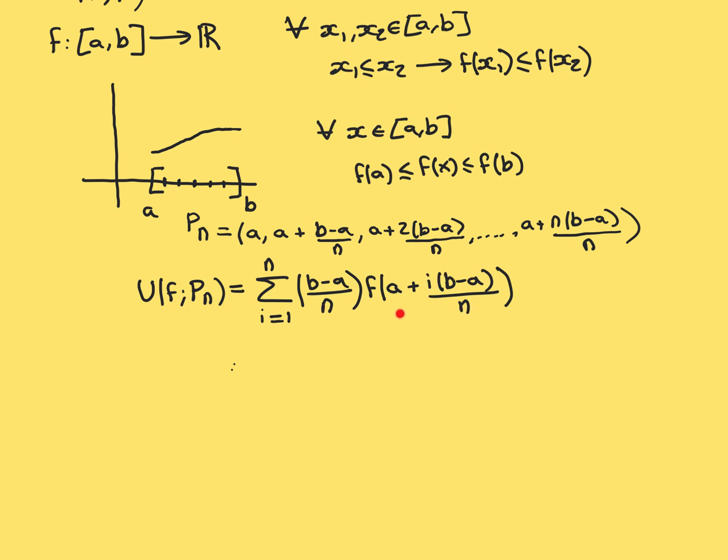So this first term in this sum, I'm happy with. Then let's go on to the second subinterval of my sum. So i is equal to 2 now. Again, the length of the subinterval is (b−a)/N.